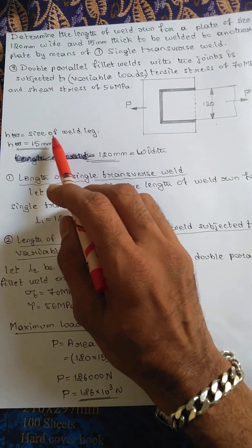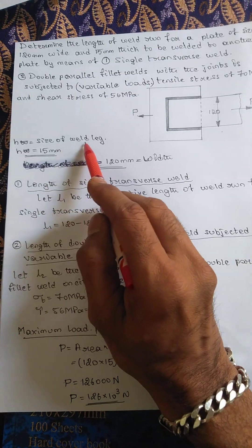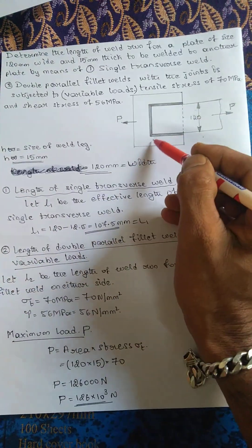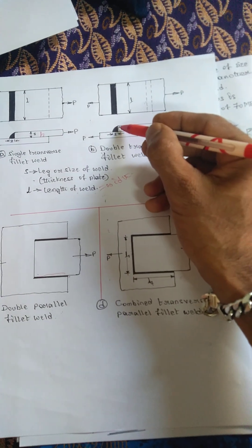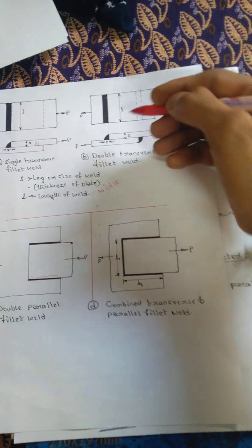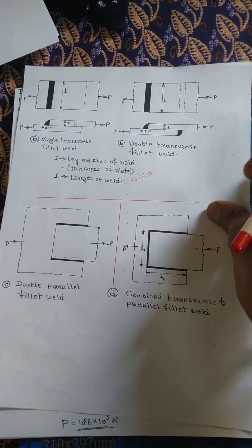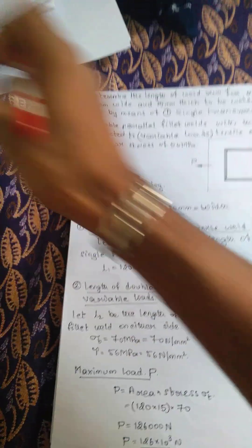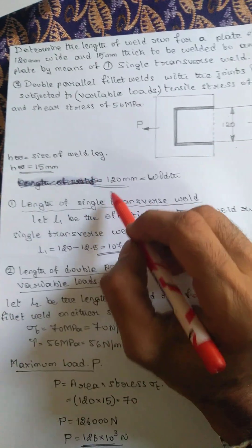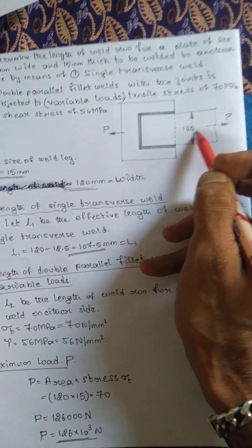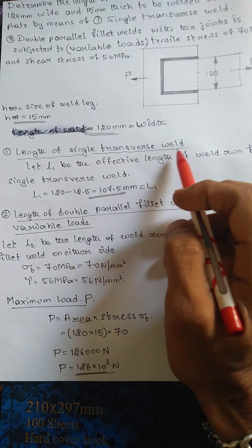Initially, data according to the data handbook. H is equal to size of the weld - this portion is thickness of plate. Next is width of the plate that is 120 millimeters. Initially we will see the length of single transverse weld.